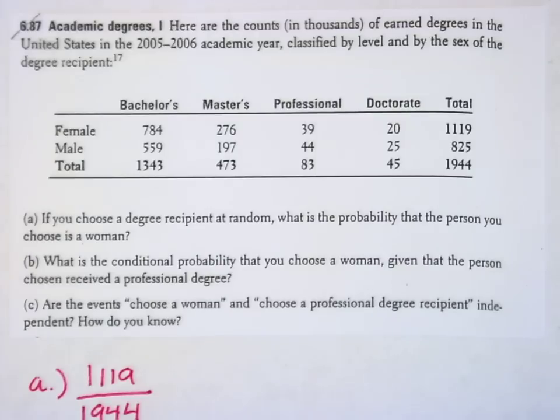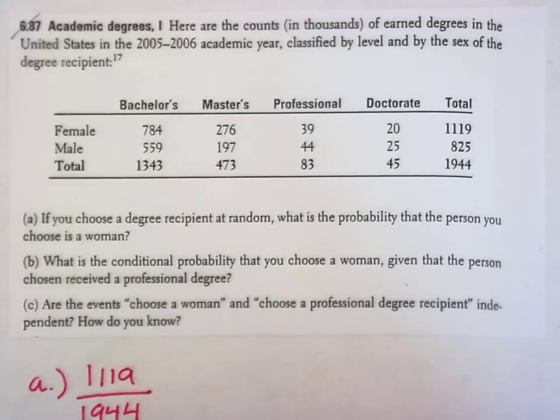Part B, what is the conditional probability that you choose a woman given that the person chosen received a professional degree? So look at this really carefully. The condition is a professional degree. So I'll write it this way. Prof. Degree.